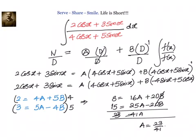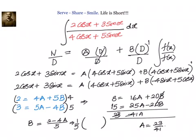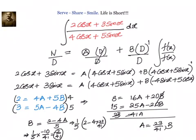Once we know A we can easily find B. From 2 equals 4A plus 5B, we get 5B equals 2 minus 4A, so B equals (1/5) into (2 minus 4A). Substituting A equals 23/41 gives B equals (1/5) into (82/41 minus 92/41) which equals (1/5) into (minus 10/41), giving B equals minus 2 divided by 41. So A equals 23/41 and B equals minus 2/41.